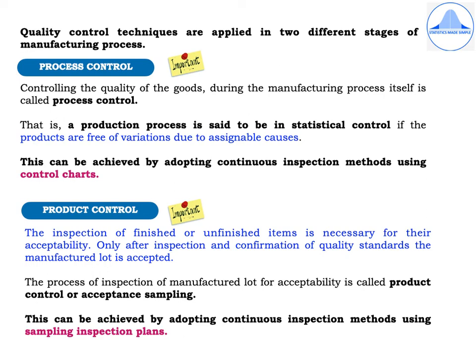Quality control techniques are applied in two different stages of the manufacturing process: process control and product control. Process control means controlling the quality of goods during the manufacturing process itself. A production process is said to be in statistical control if the products are free of variations due to assignable causes; this is achieved using control charts. Product control involves inspection of finished or unfinished items for acceptability. Only after inspection and confirmation of quality standards can the manufactured lot be accepted. This process is also called acceptance sampling and is achieved using sampling inspection plans.